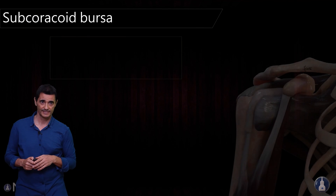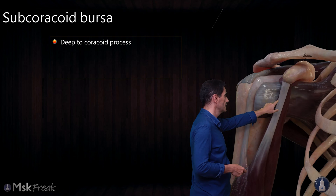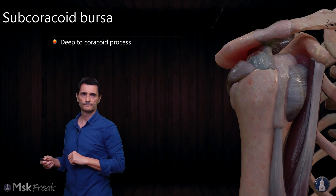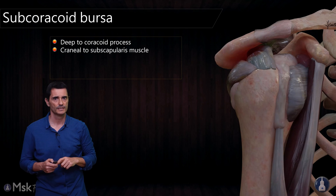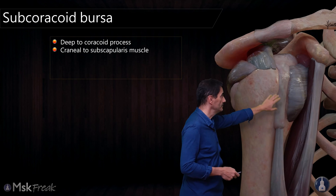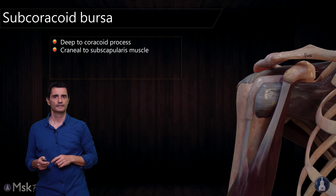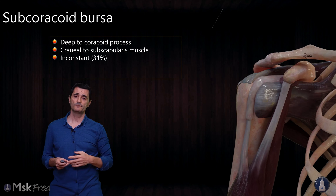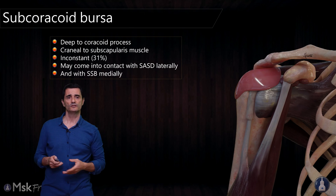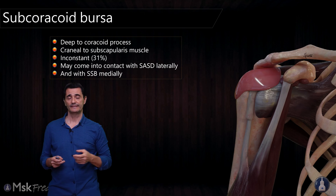What about the subcoracoid bursa? The subcoracoid bursa is located deep to the coracoid process — whereas the coracobrachial bursa is inferior to the coracoid process, the subcoracoid bursa is deep to it. The second particularity is that it's cranial to the subscapularis, whereas the coracobrachial bursa is anterior to the subscapularis. It's inconstant — we will find this bursa in only 31% of patients. It may connect with the subacromial-subdeltoid bursa laterally, or with the subscapular bursa medially, and sometimes it may connect with the glenohumeral capsule, which is why it can be considered a recess.